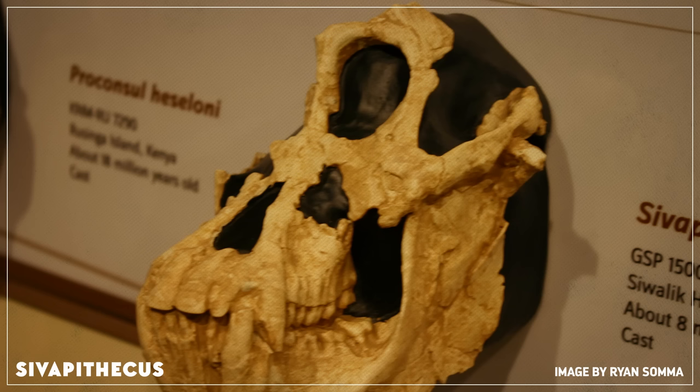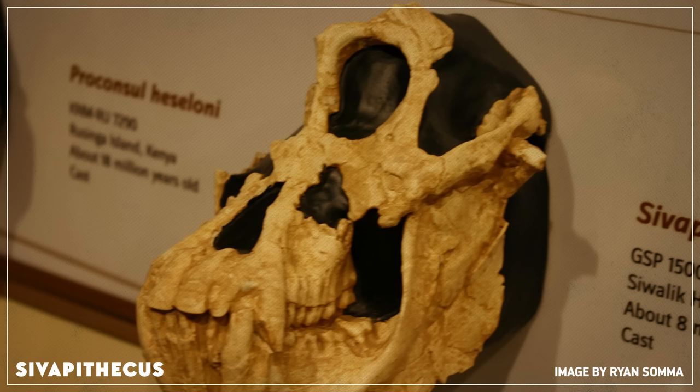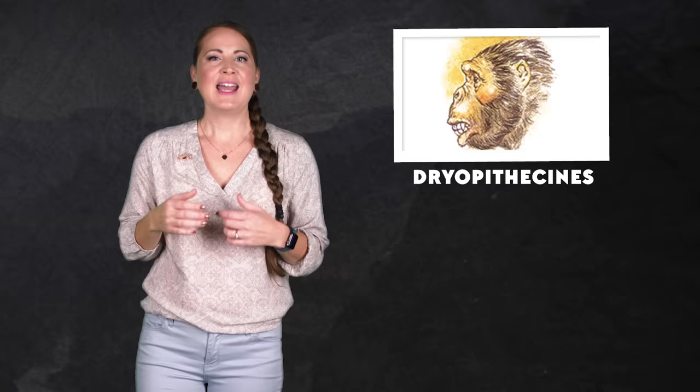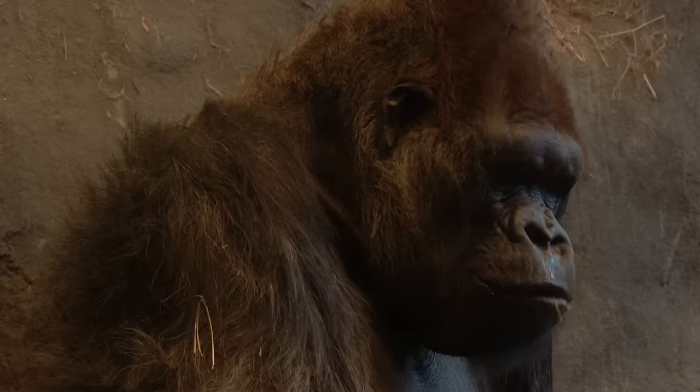Within the hominids, the orangutan lineage branched off between 12 and 15 million years ago. Some of their earliest members were part of the genus Sivapithecus, whose fossils have been found throughout Asia. And around the same time, another tribe of hominids, known as the Dryopithecines, were living in Europe. And this tribe may have given rise to the African apes, including gorillas, chimps, and bonobos.